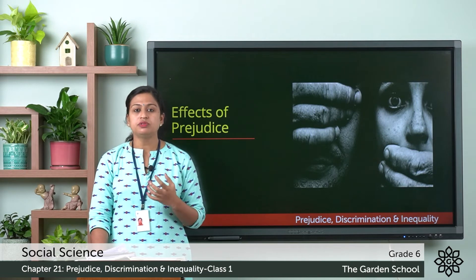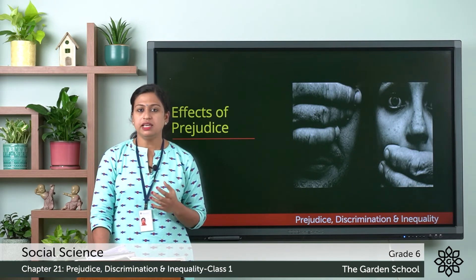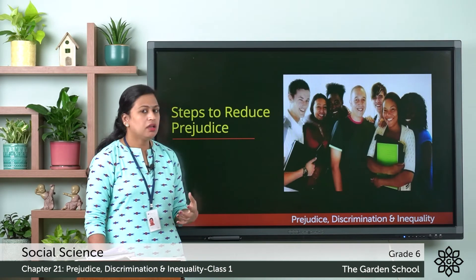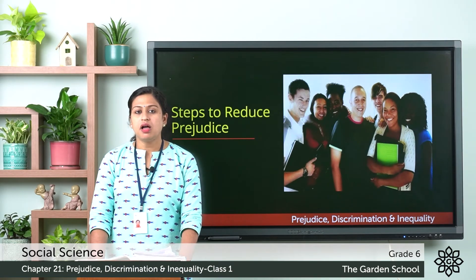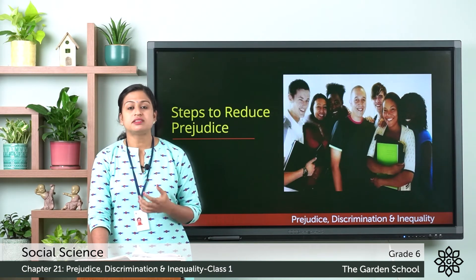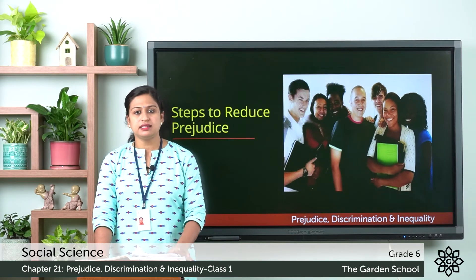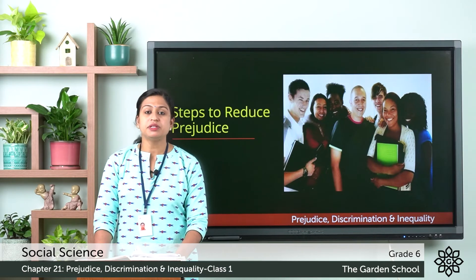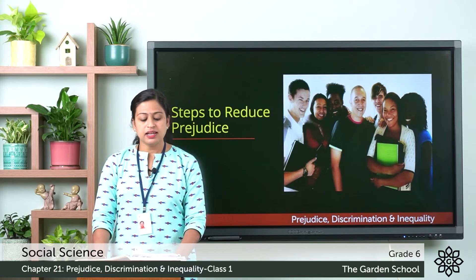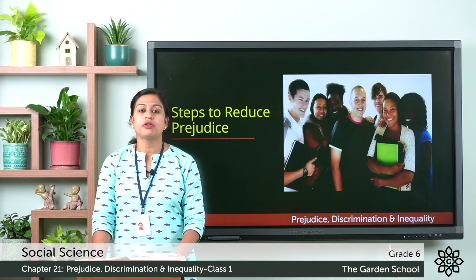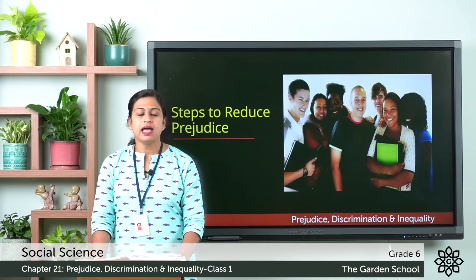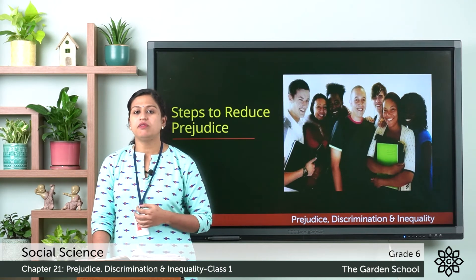Now let us discuss steps taken by individuals and governments to reduce prejudice. The government can form new strict laws and effectively implement existing laws against cruel acts committed towards backward sections of society. Spreading education — including adult education — also helps, as it makes people open-minded and creates a healthier environment.